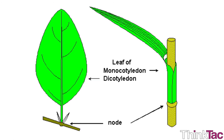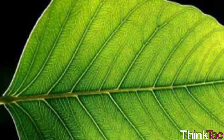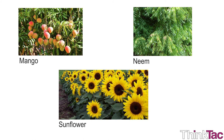Leaves of monocotyledonous plants usually have parallel venation, meaning the veins in the leaves of these plants run parallel to each other. Examples of monocotyledonous plants include grass, wheat, maize, and sugarcane. Leaves of dicotyledonous plants usually have reticulate venation, meaning the veins in the leaves of these plants originate from a single big vein and extend in a net-like manner. Examples of dicotyledonous plants include mango, neem, sunflower, etc.